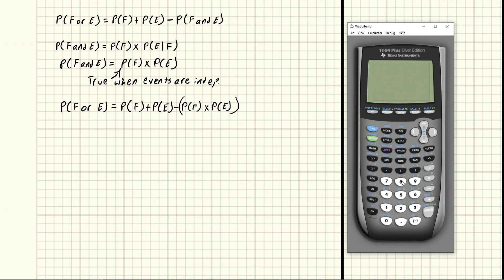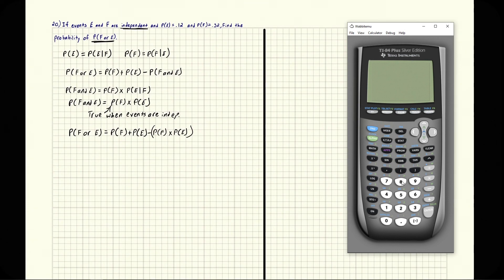This is the formula, and remember, this only works when we are told events are independent. So we can just derive it. That's how I do it—I don't have this memorized. Now all we need to do is plug in the values. We have P(E) = 0.12 and P(F) = 0.32.